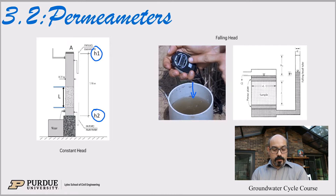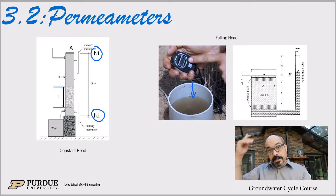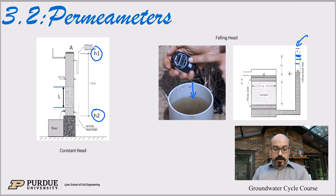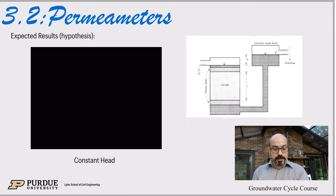So oftentimes we're left with what we call falling head permeameters. You might remember that picture from a previous lecture — where does the water go? It goes into the ground and we don't see it. One way to do that is to put a piezometer, like a PVC pipe, in the ground, fill it up with water, and watch it drop. The head is not constant; it's actually dropping in this tube over time.